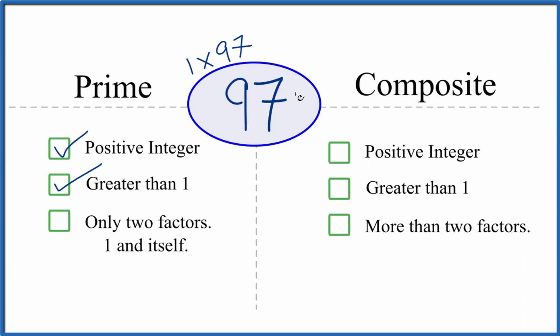But are there any other numbers that will go evenly into 97? Any other factors? The answer is that there aren't. So there are only two factors. That means that 97 is a prime number.